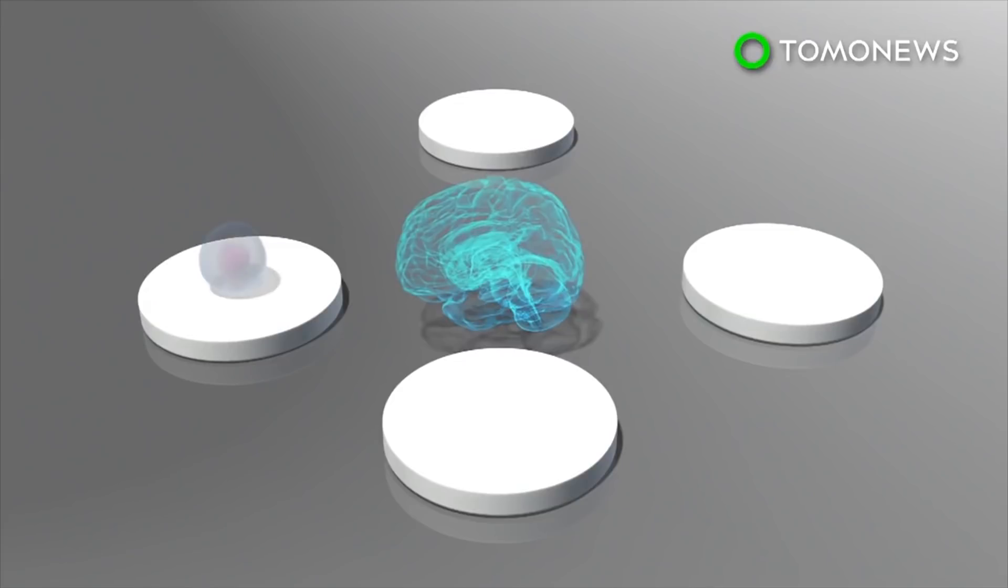The team looked for the presence of neurons in different stages of development, including stem cells, intermediate progenitor cells, immature neurons, and new neurons.